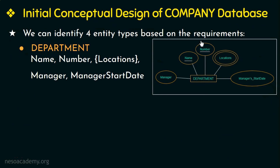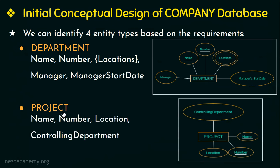The department name and number are unique and are therefore key attributes for this entity type, so either can serve as the key attribute. The next entity type identified is project, with attributes project name, project number, location, and the controlling department. The project name and number are unique, so either can be a key attribute for this entity.